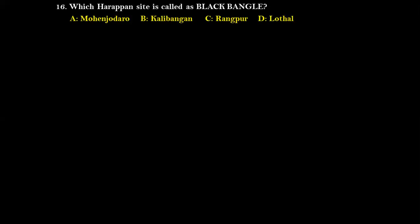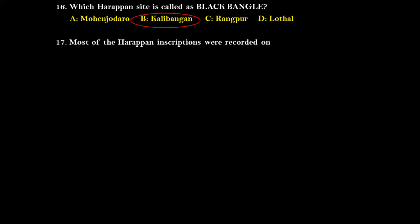Question sixteen: Which Harappan site is called 'Black Bangles'? Options are Mohenjo-Daro, Kalibangan, Rangpur, and Lothal. The right answer is Kalibangan, because Kalibangan literally means 'black bangles.' Question seventeen: Most Harappan inscriptions were recorded on stones, bricks, copper blades, or rocks? The right answer is option A — stones.